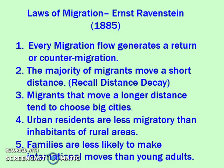The third law is that if a person moves a long distance, they choose a big city — big cities offer more opportunities and accessibility that help make the move smoother. The fourth rule is that urban residents are less migratory than inhabitants of rural areas, because if you lose your job in a city you can find another in the same city, whereas in a rural town you'd probably have to move. The last rule is that families are less likely to make international moves than young adults — it's just easier for single people or young couples. You need to know these laws well, but you don't need to memorize them word for word or in any particular order.